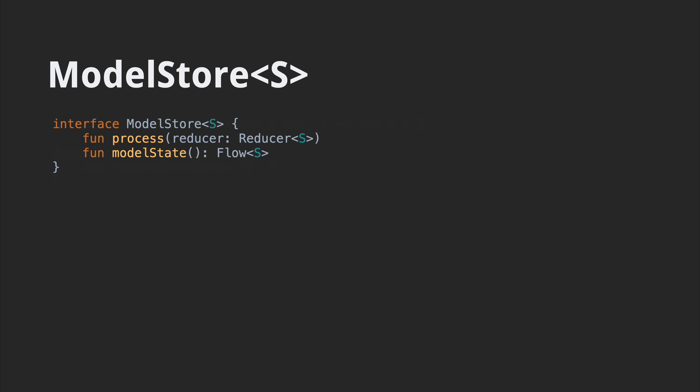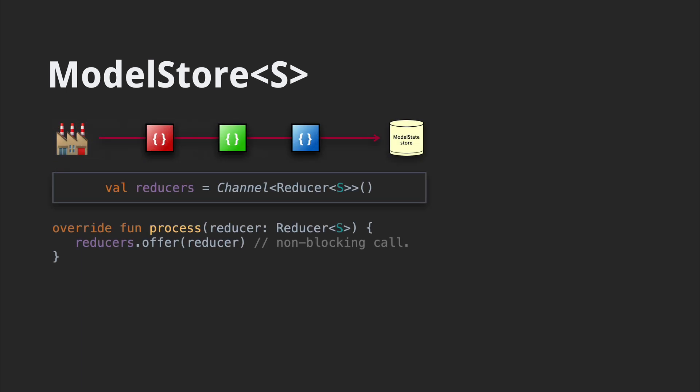Our end goal is to apply these little reducer functions onto our model. The model store is where we make that happen. We'll focus on the input process function. There's nothing very reactive about a plain function call — it's mostly designed to connect with flows of reducers. Internally, we're going to want to rebuild the stream of reducers to get the benefits of our reactive programming approach. We can do that using Kotlin channels. Channels allow two coroutines to communicate. With a call to the reducer's offer function here, we put up a reducer for whoever is listening, and execution just keeps going.